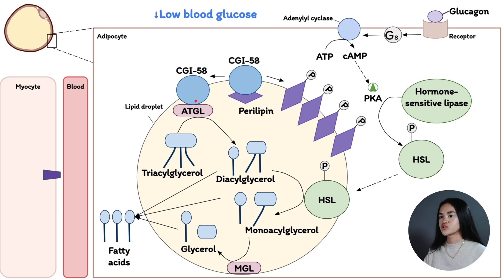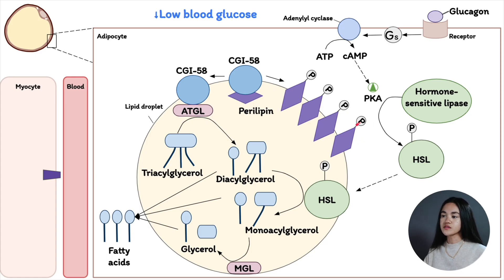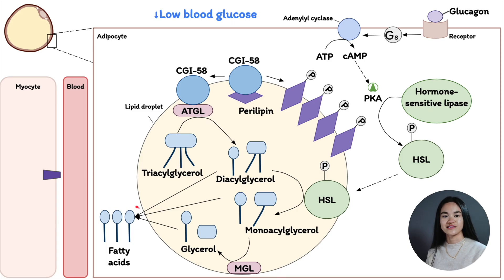Acylglycerol lipase turns triacylglycerol — three fatty acid chains bound to glycerol — into diacylglycerol. From diacylglycerol, the phosphorylated perilipin interacts with hormone-sensitive lipase to convert it to monoacylglycerol. Then monoacylglycerol is hydrolyzed by monoacylglycerol lipase. Now we have three fatty acids, and these fatty acids leave the adipocyte and are transported in the blood.